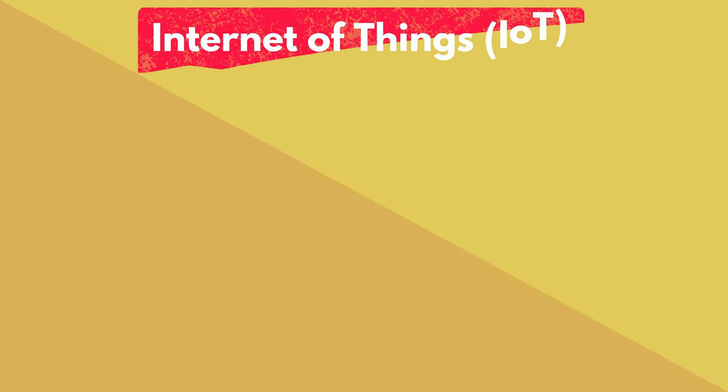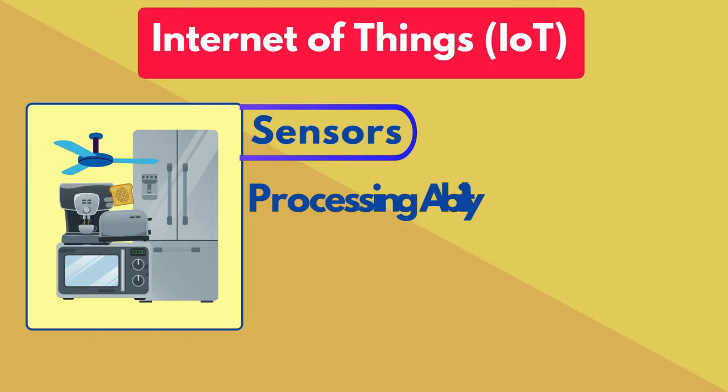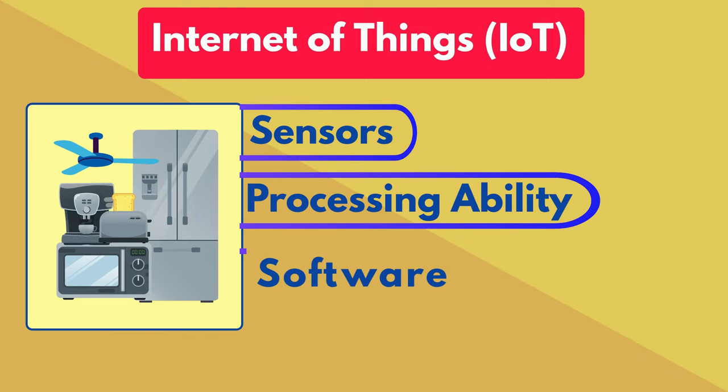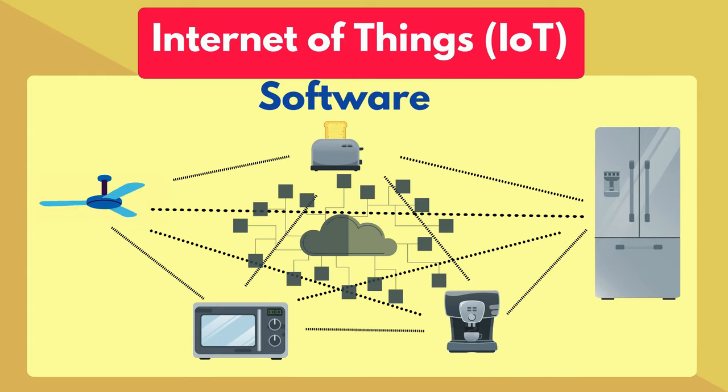Now IoT isn't just some fancy buzzword. It describes devices with sensors, processing ability, and software that connect and exchange data with devices and systems over the internet and other communication networks.